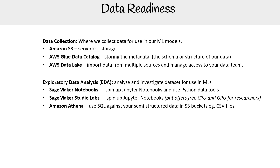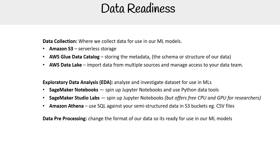We have Amazon Athena, where you use SQL against semi-structured data — maybe CSV files, JSON files, or Parquet files in your S3 buckets. That's pretty straightforward. Then we move into data pre-processing, which is like data wrangling or munging — doing transformations to the data.